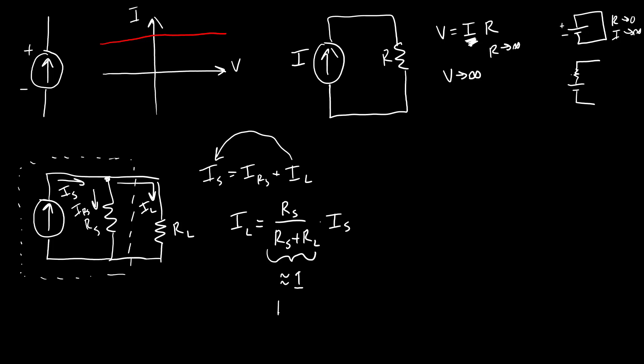And you accomplish that by having RS very, very large. So if RS is a very, very big number, then this fraction basically becomes RS over RS. If RL is negligible, this fraction becomes one. And your load current will just be equal to one times your source current.